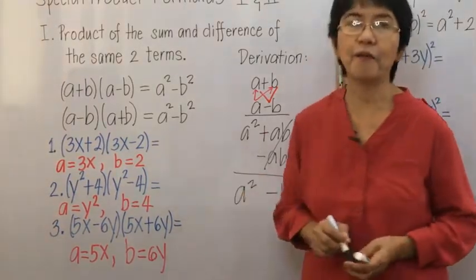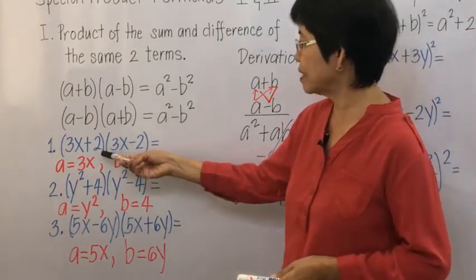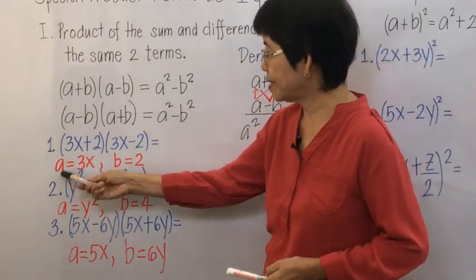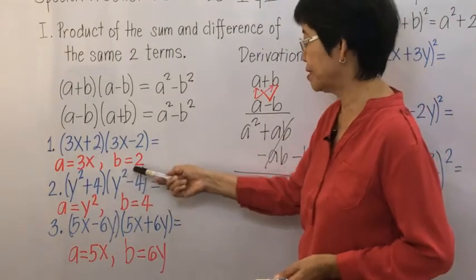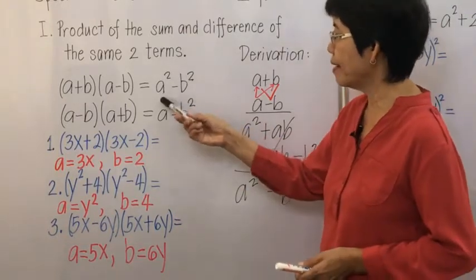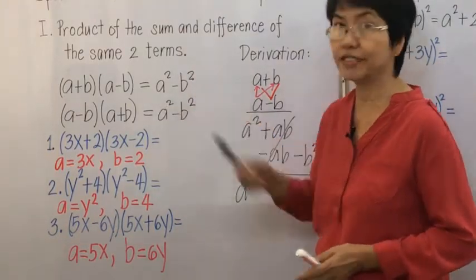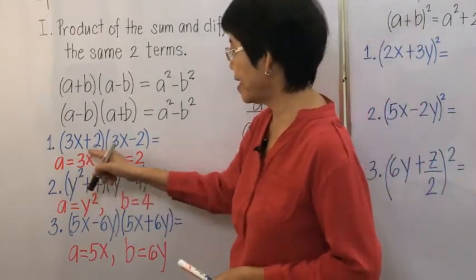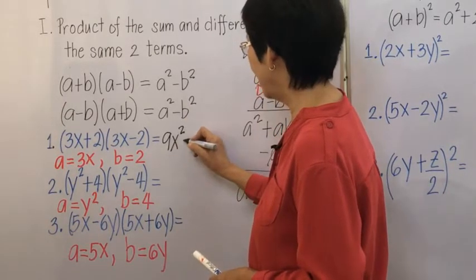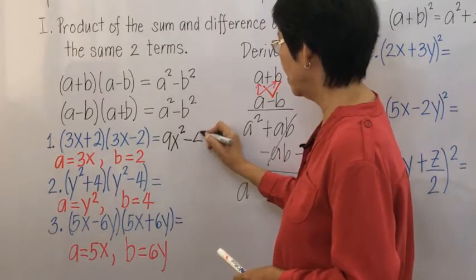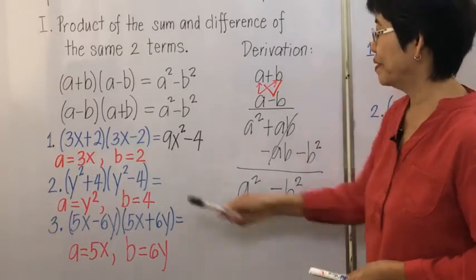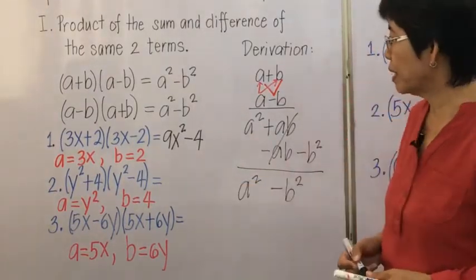Here are some examples. Example 1: 3x plus 2 times 3x minus 2. Here a is equal to 3x and b is equal to 2. We use the formula: square a and then square b and get the difference of the two. We square 3x to get 9x squared, and we square 2 to get 4. So the answer is 9x squared minus 4.